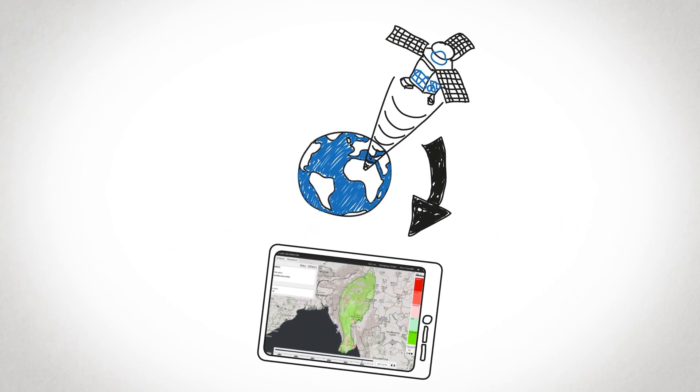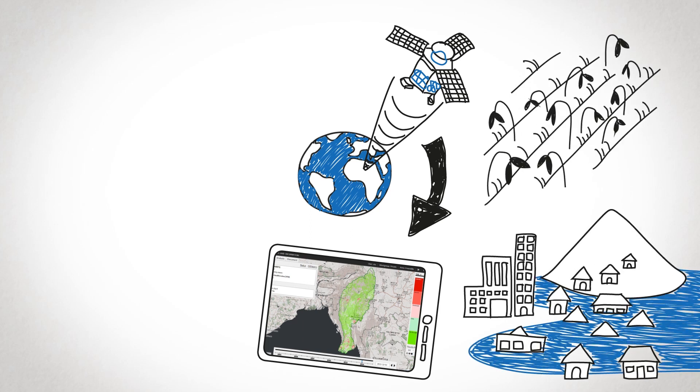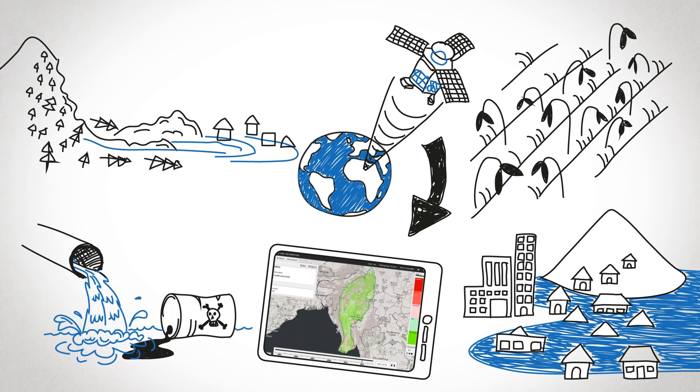Earth observation can also provide critical information to prevent disasters caused by floods, droughts, landslides, or industrial pollution.